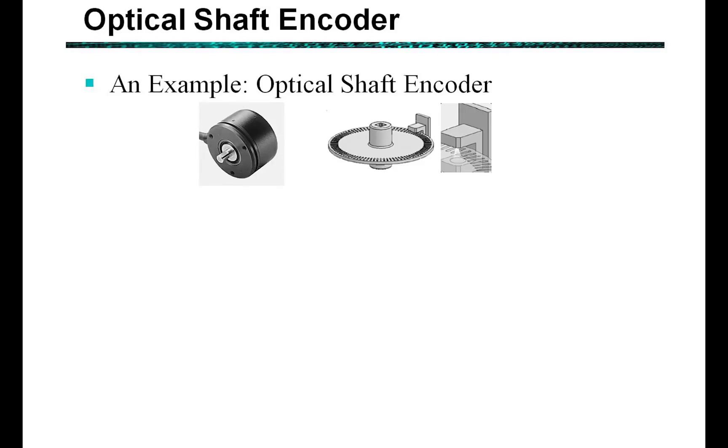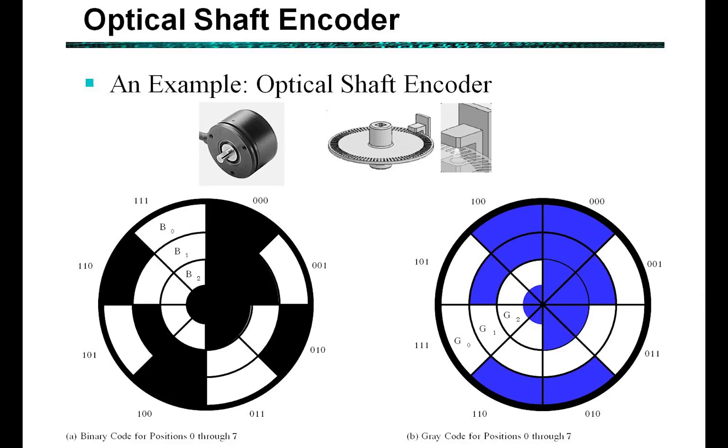Alright, let's consider an optical shaft encoder example where we have a motor and we want to know the position of that motor somewhere around the 360 degrees. We can use an optical shaft encoder for that, where we have a light source projecting through and a photosensor on the other side, and then some sort of encoded disk that we're going to use to indicate where we are around that disk.